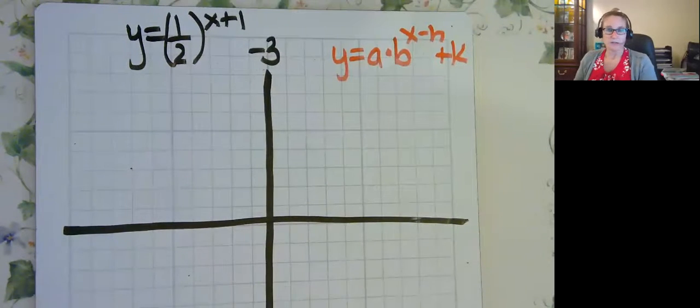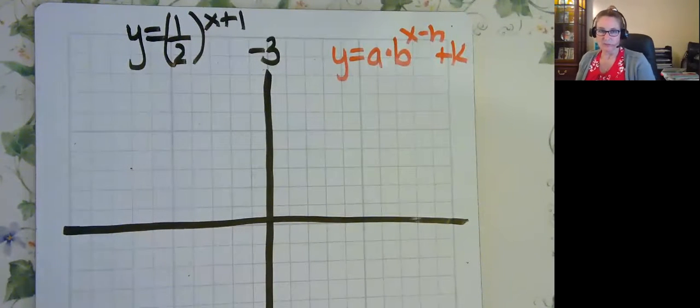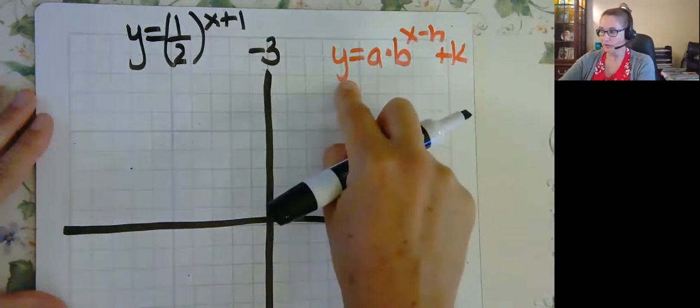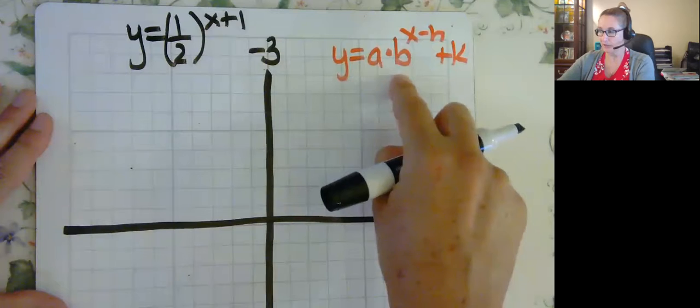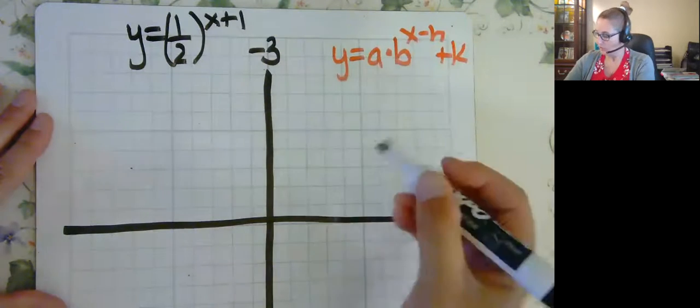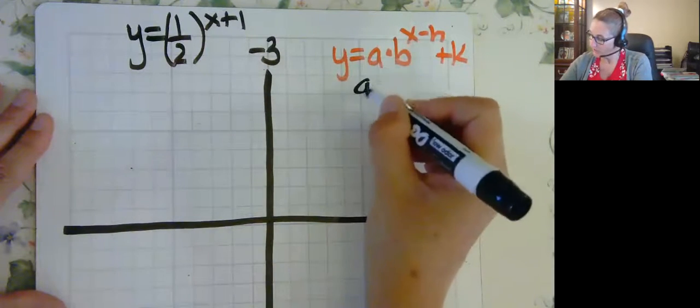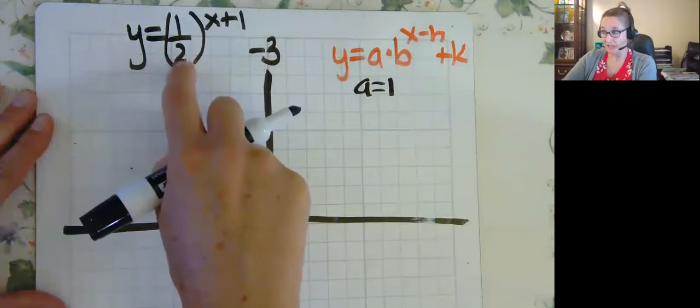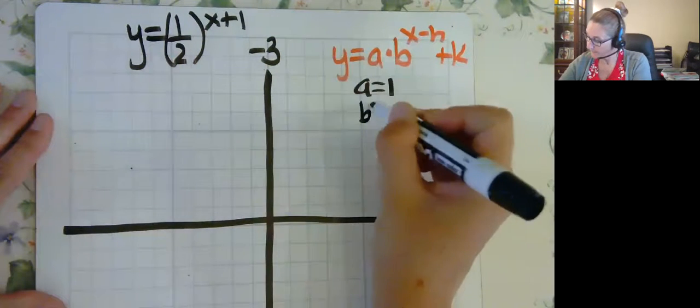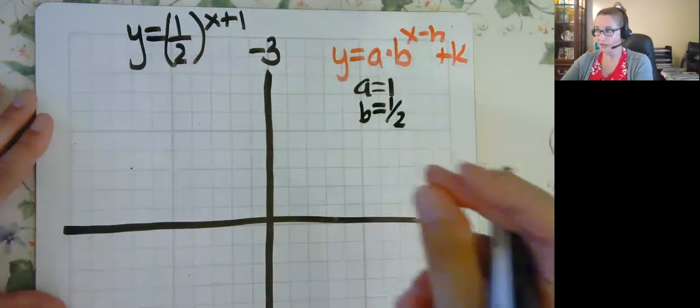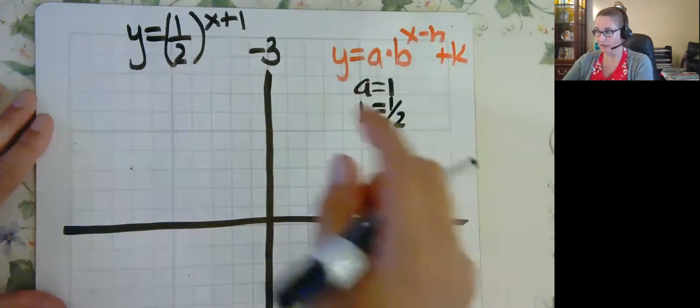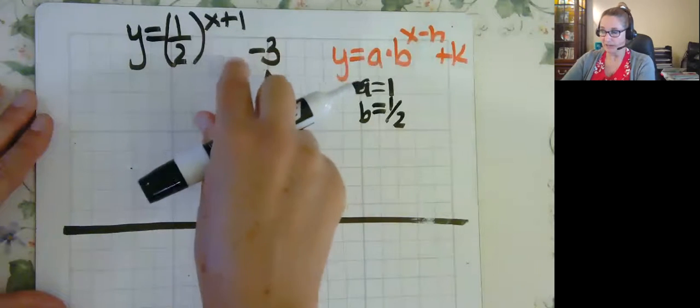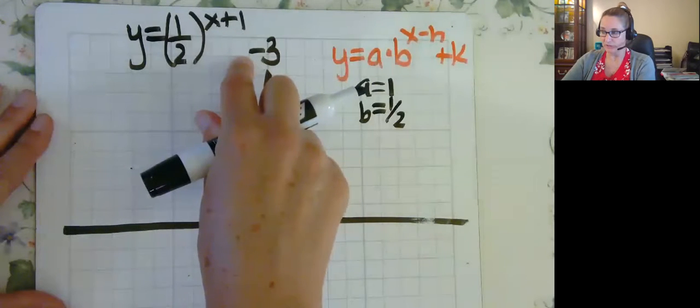So on this example, y equals 1 half raised to the x plus 1 minus 3. This is an exponential. The general equation is y equals a times b to the power of x minus h plus k. So in this case, your a is actually 1 because there's not a number in front here. Your b is this 1 half. So that means we're multiplying by 1 half. This x plus 1 is going to move our graph left 1, and this minus 3 is going to drop our graph down 3.